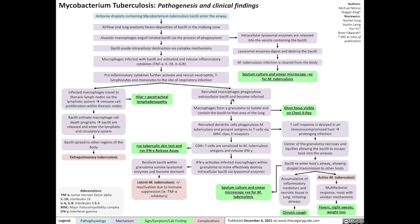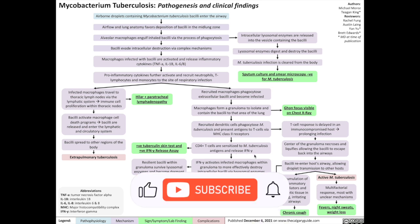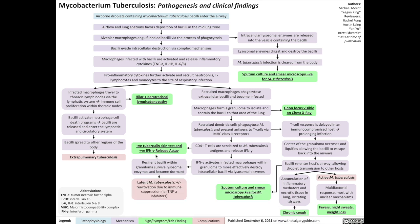Another possible outcome for the infected macrophages is that they will eventually form a granuloma to isolate and contain the bacilli to that area of the lung. This leads to what's called a Ghon focus, visible on chest x-ray. As part of the inflammatory process, recruited dendritic cells will phagocytose the M. tuberculosis bacilli and present its antigens to T-cells via MHC class II receptors.